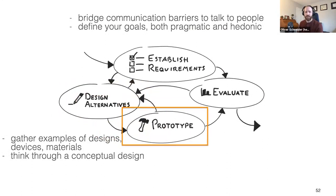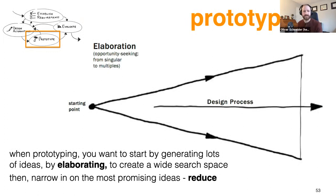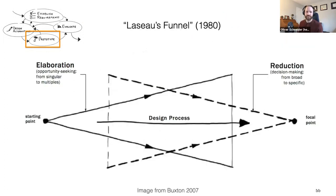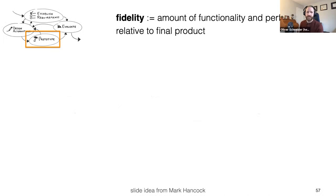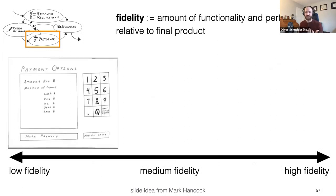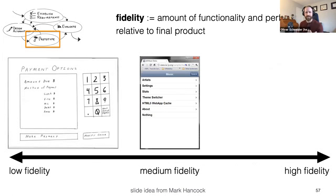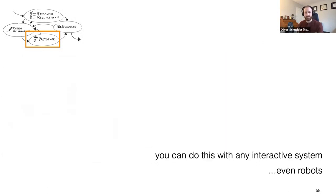Moving on to prototyping: start by generating lots of ideas through elaboration to create a wide search space, then narrow in on the most promising ideas. This is known as Laseau's funnel — generate lots of ideas, reduce them to come up with the most interesting, and iteratively do this to arrive at a final solution. You go from cheap, fast, low-fidelity prototypes to more involved, high-fidelity prototypes. Fidelity is the amount of functionality and performance relative to the final product — from a sketch or paper prototype all the way to a high-fidelity prototype that looks like the final system.